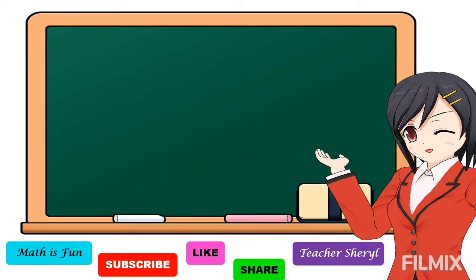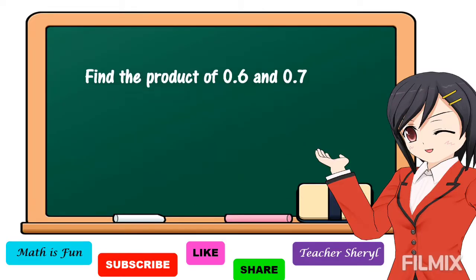To understand the steps, let's study some examples. Find the product of six-tenths and seven-tenths. To get the answer, first we're going to write the numbers in column. Then we're going to multiply just like multiplying whole numbers — we disregard the decimal point first. So let's multiply: six times seven, the answer is equal to 42.